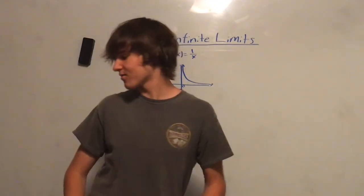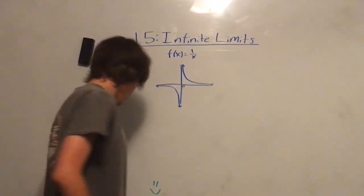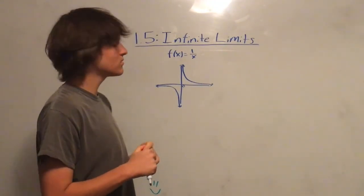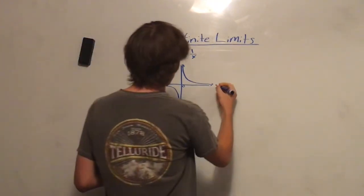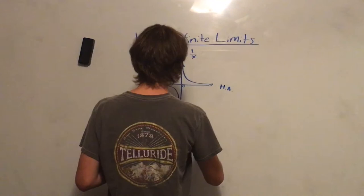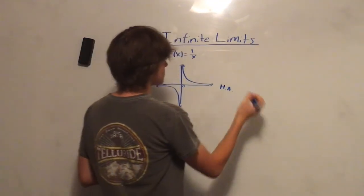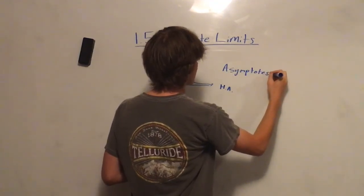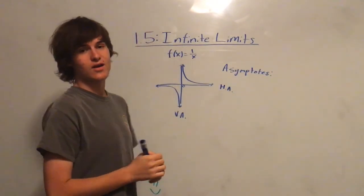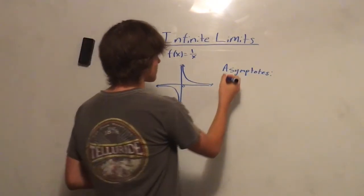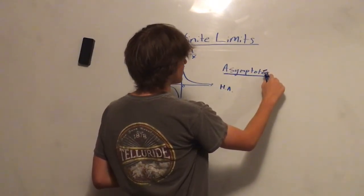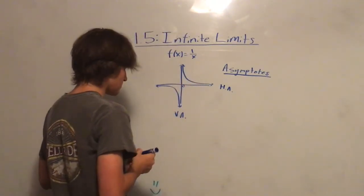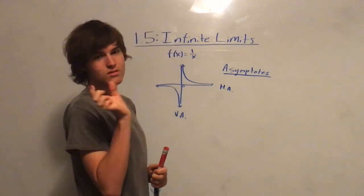Infinite limits are very interesting because they show up mainly in two different ways: in the form of a horizontal asymptote and a vertical asymptote. If you don't know what asymptotes are, you sure should at this point after having spent so much time in algebra and pre-calc. Asymptotes are basically lines on a graph that the function approaches over time but never actually touches.